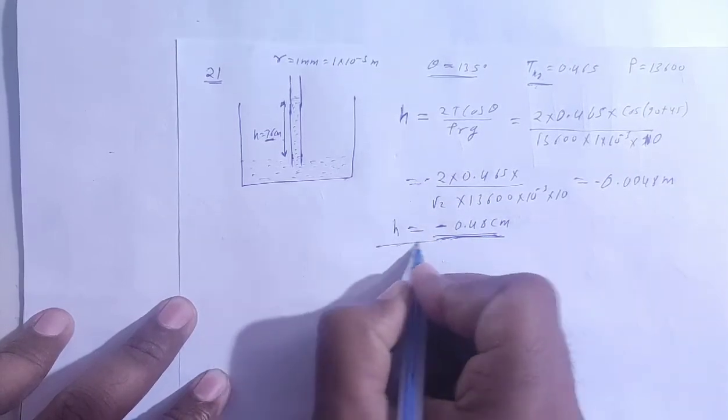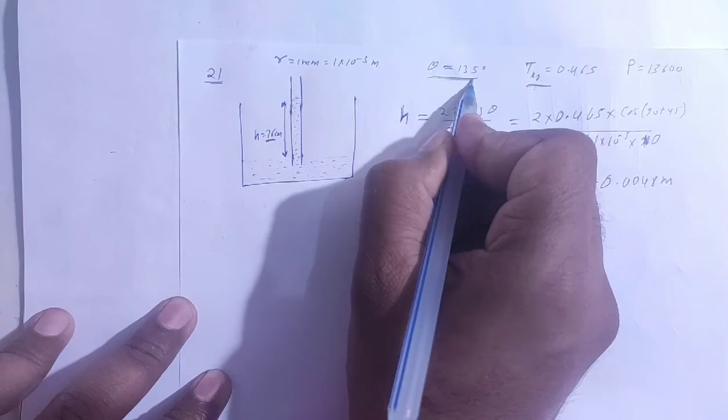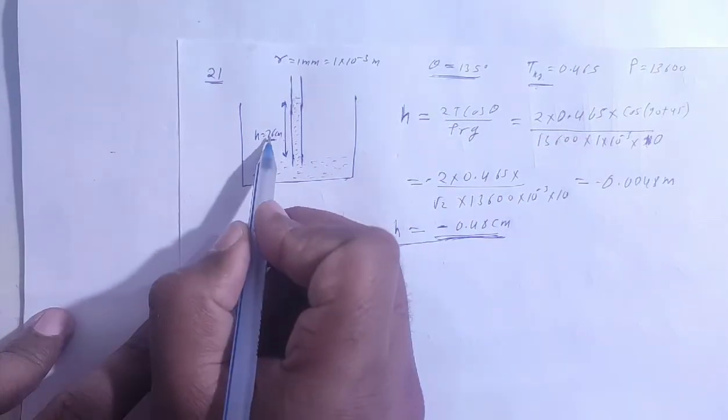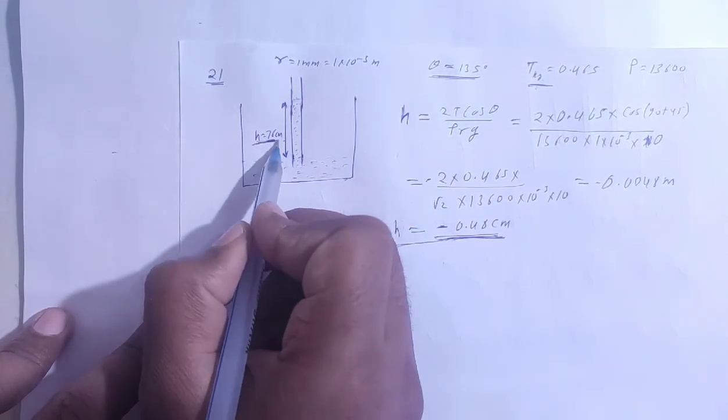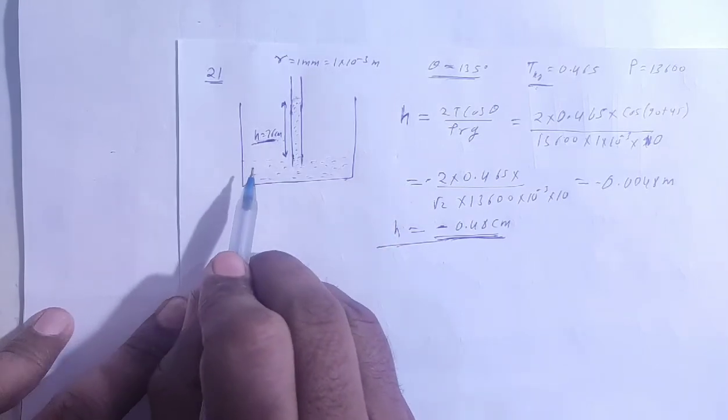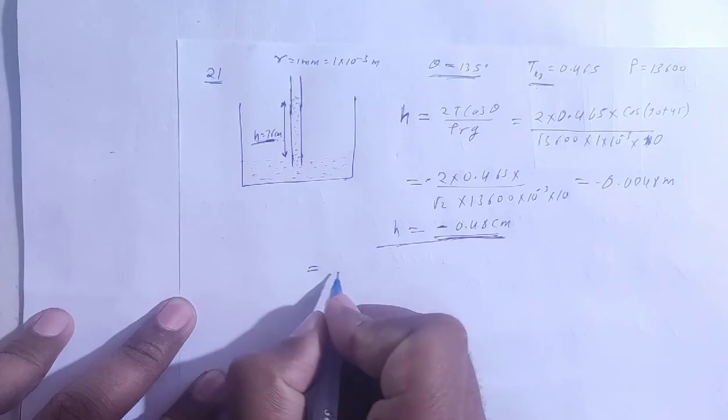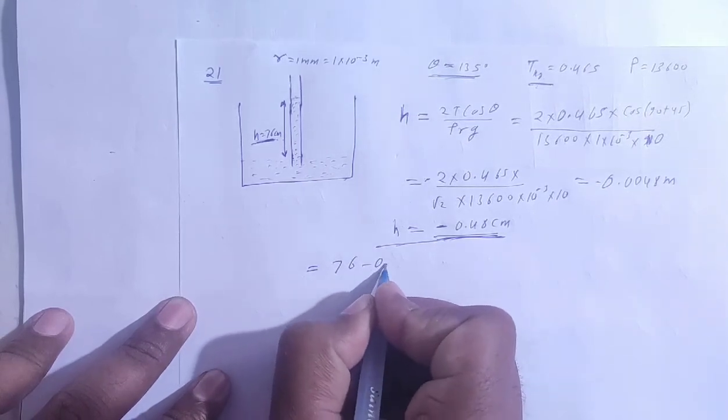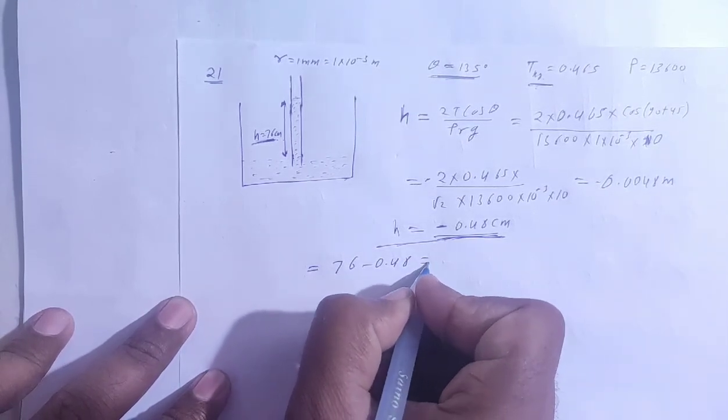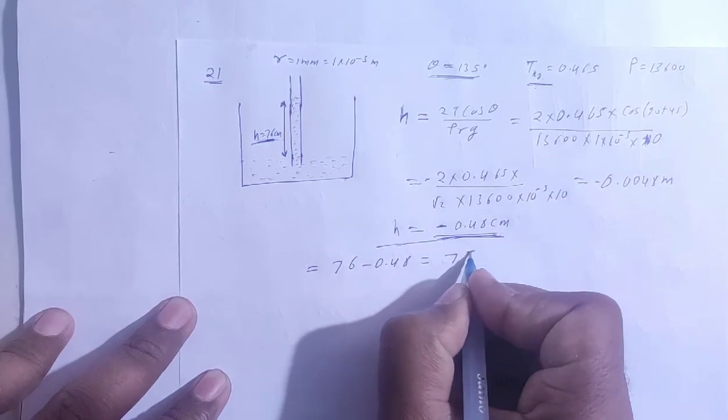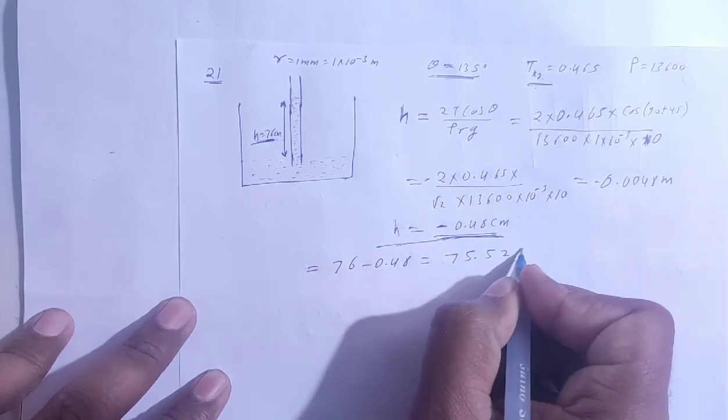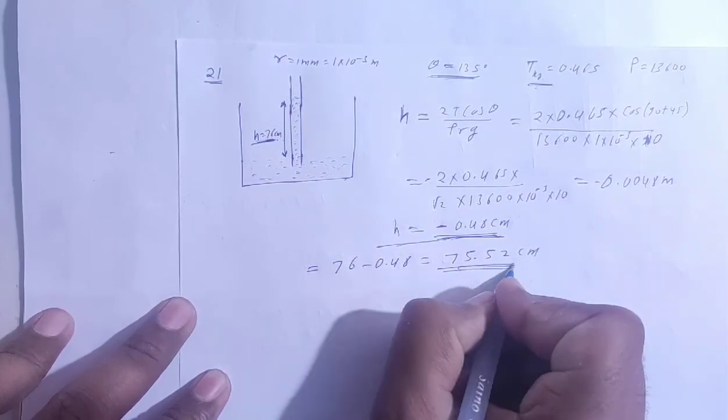Because the angle is more than 90 degrees. So first what was the measure? 76 centimeter. Now what will the measure be if we consider surface tension? 76 minus 0.48, how much will it be? It will be about 75.52 centimeter. This is the height.